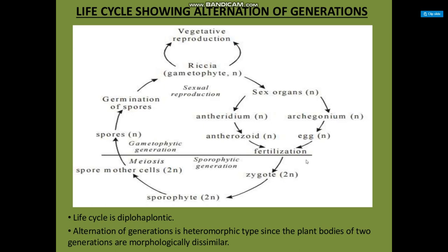This diagram shows the life cycle — alternation of generations. The life cycle is diplohaplontic. Alternation of generation is heteromorphic type, since the plant bodies of the two generations are morphologically dissimilar. Thank you.